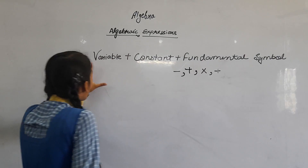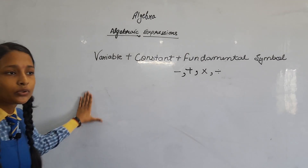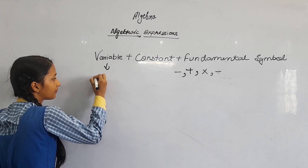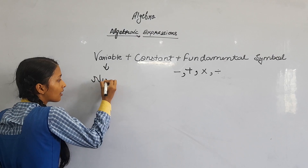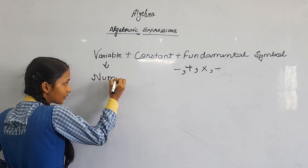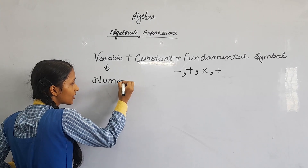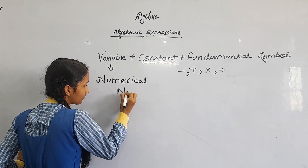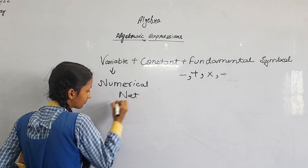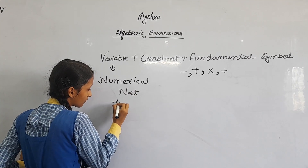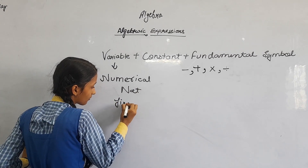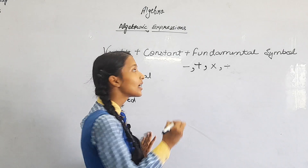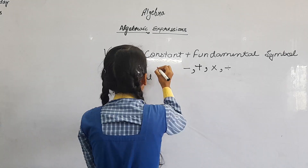Variables are those whose numerical value is not fixed. And constants are those whose numerical value is fixed.